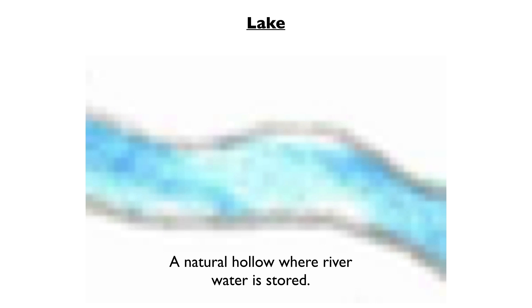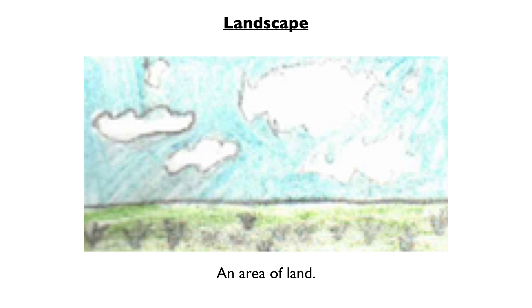Lake. This is a natural hollow in the land that is filled with water along the river's path. Landscape. This is an area of land that the river flows through.